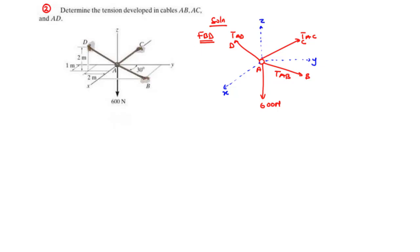We have the angle between the positive Y axis and TAB to be 30 degrees. To move from point A to D, we are going to move some distance along the X, Y, and Z axes. So for TAD, we are going to represent the force in the Cartesian vector form.